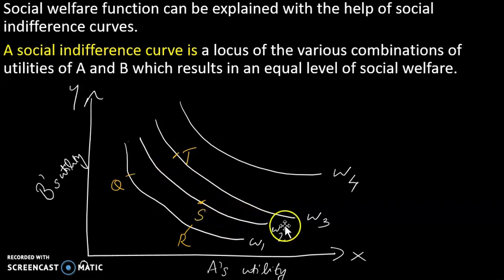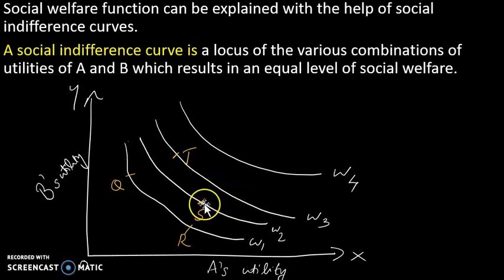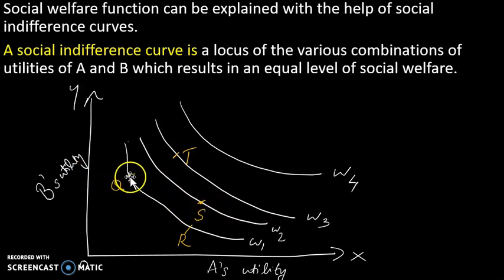A higher social indifference curve means a higher level of social welfare for society. We have a single point representing a higher level. In a society, individuals share the indifference curve. If there is a move along the curve between points such as Q and S, then Q and B represent the utility positions of individuals at that point.